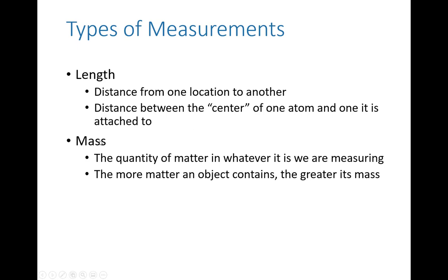Length could also be very large, like the distance from the sun to Neptune. We also measure mass a lot in chemistry — that is a measure of the quantity of matter, and we'll see later that it's directly related to the number of atoms a substance has. The more matter an object contains, the greater its mass.